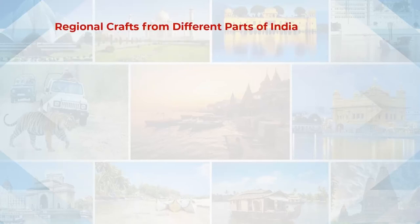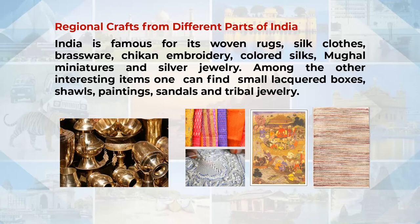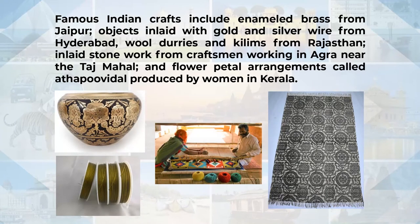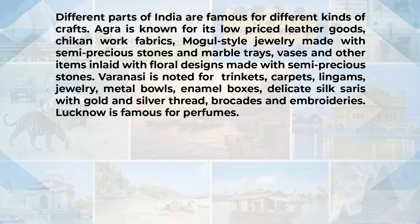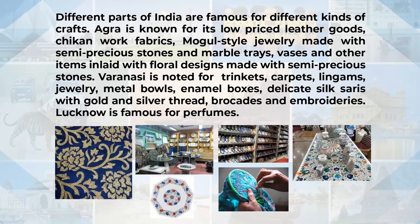Regional crafts from different parts of India: India is famous for its woven rugs, silk clothes, brass ware, chikan embroidery, coloured silks, Mughal miniatures and silver jewellery. One can also find small blackwood boxes, shawls, paintings, sandalwood and tribal jewellery. Famous Indian crafts include enamel brass from Jaipur, objects inlaid with gold and silver wire from Hyderabad, wool daries and kilims from Rajasthan, and inlaid stonework from craftsmen near the Taj Mahal in Agra. Agra is also known for low-priced leather goods, Mughal style jewellery made with semi-precious stones and marble trays.